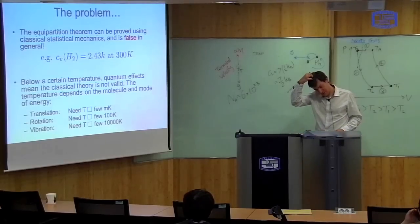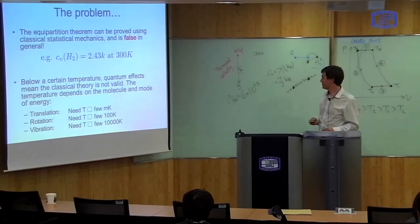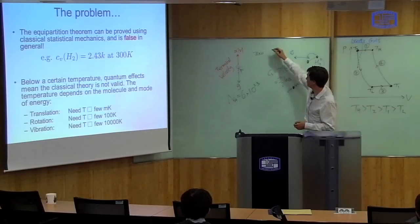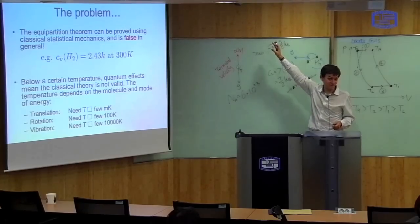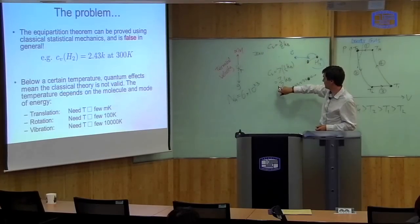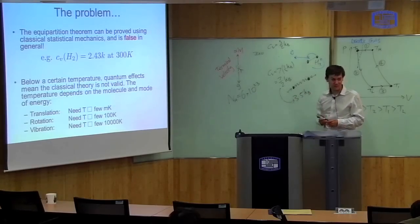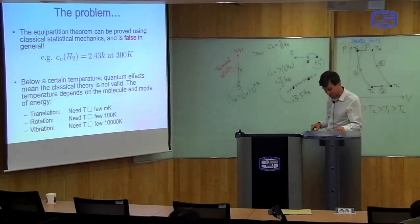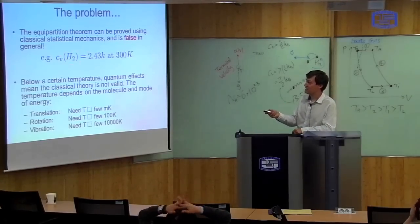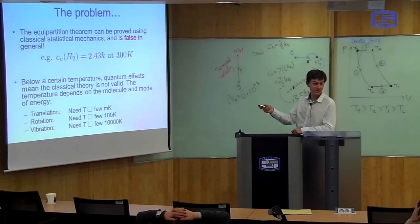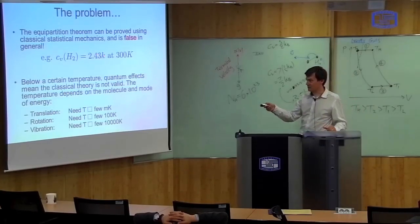So that's the equipartition theorem. But there's a problem with it — it doesn't work. For the monatomic gas it works very well, predicting Cv = 3/2 kB, and when you measure it, you find that yes, it is. But for the diatomic gas it predicts 7/2, which is 3.5 Boltzmann constants. When you measure it at room temperature — for example, the heat capacity of hydrogen — you find it's 2.43. So there's something wrong with the theory: it predicts 3.5 but you get 2.43.